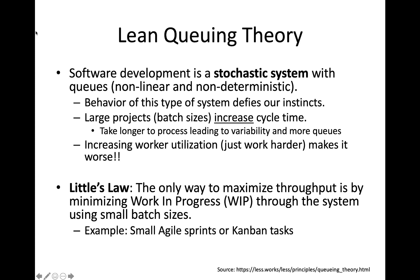This kind of defies our instincts. As a project manager, you would think that as you improve the utilization of software developers, you would get more work done. But that's not truly the case — in most cases, you'll get less work done because you've increased their utilization. And the reason why comes down to something called Little's Law, which is based on lean queuing theory.